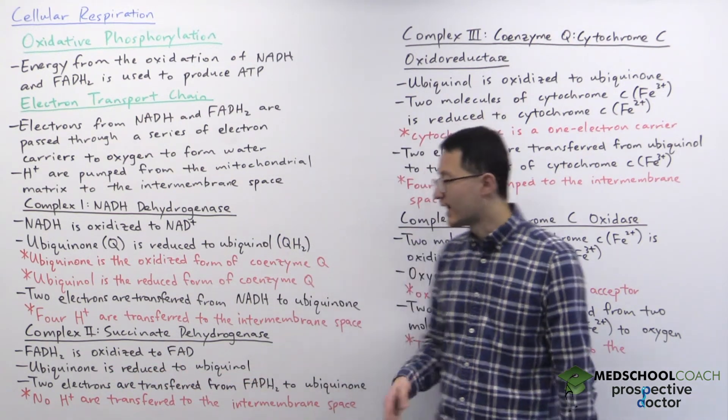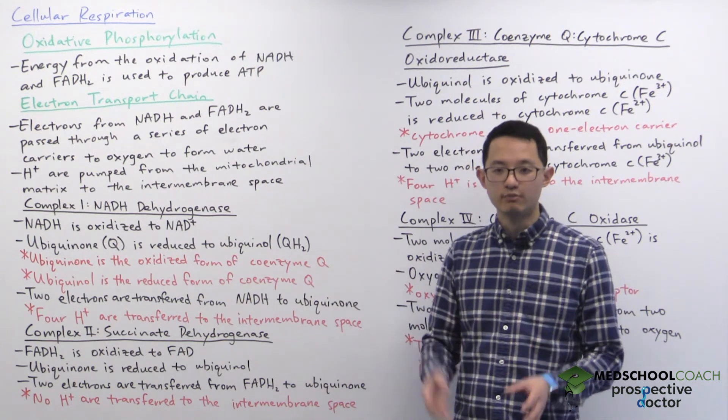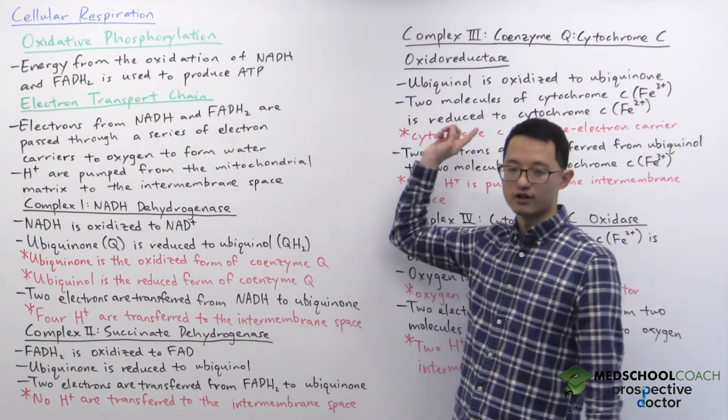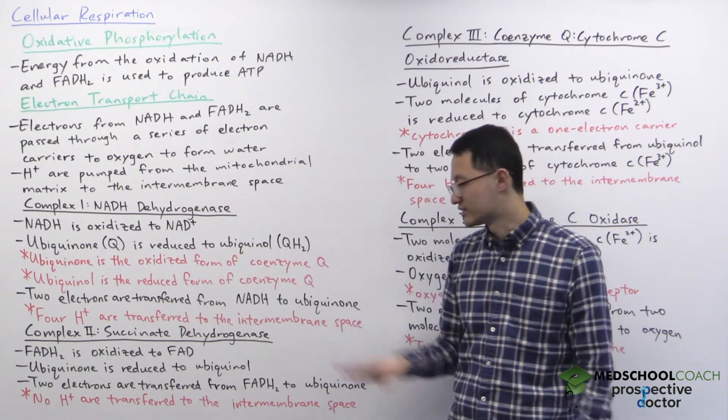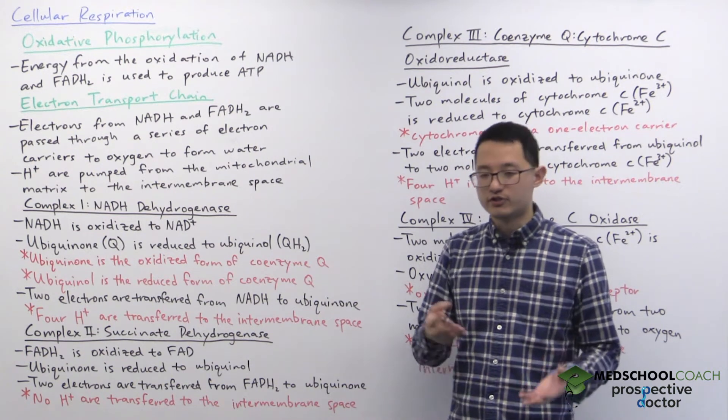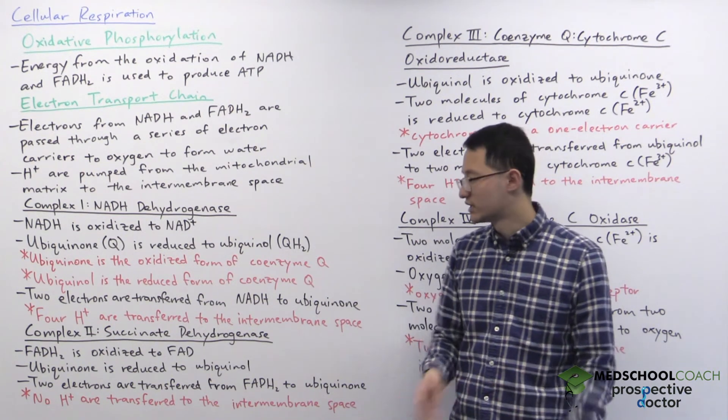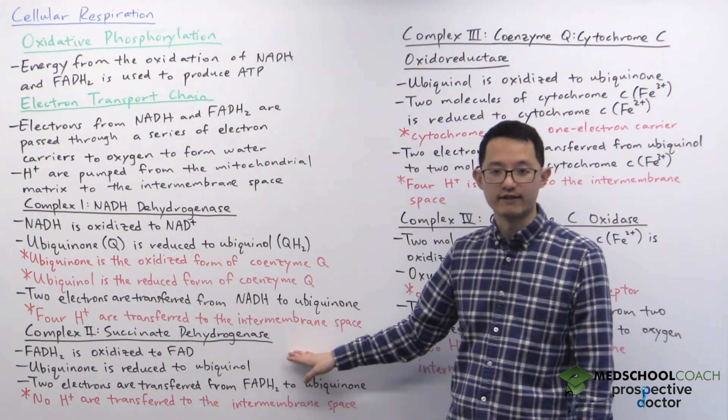In the electron transport chain, succinate dehydrogenase will oxidize FADH2 to FAD and it will reduce ubiquinone to ubiquinol. So what you'll notice is that complex 1 and complex 2 both produce ubiquinol, which then continues on to complex 3. So that's why there's two different pathways. They both produce the same product; it's just a matter of which substrate they use. Complex 1 uses NADH, complex 2 uses FADH2.